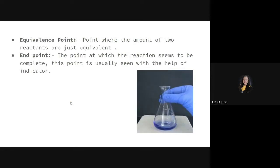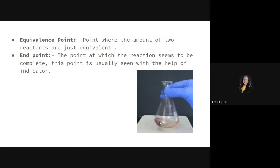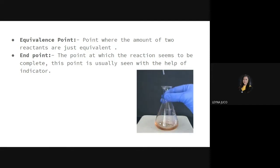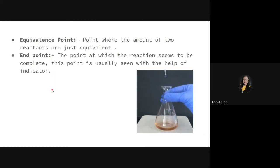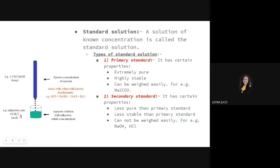We also have the equivalence point — the point where the amounts of the two reactants are just equivalent. This is what we look for in titrometry. The equivalence point is when your titrant and analyte amounts are equal. Notice the color changed — once the color changes, that is the equivalence point. In the sodium hydroxide and hydrochloric acid example, you determine how much sodium hydroxide is needed to cause the color change.